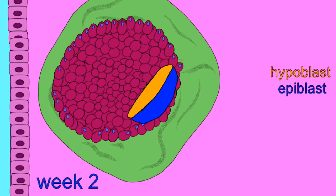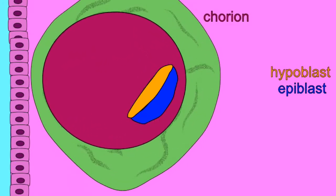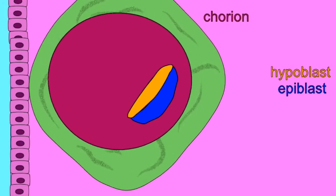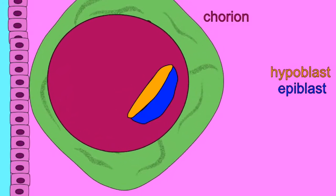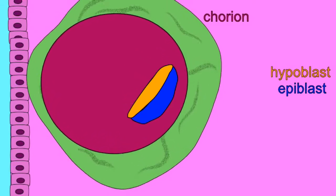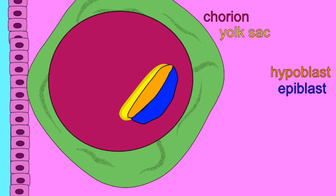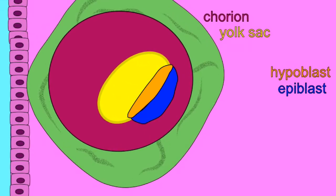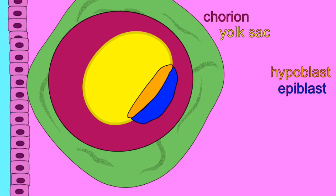Many cells which begin development in the second week of embryonic life form extra-embryonic membranes — membranes of embryo cells outside the body proper of the embryo. The chorion is very important, formed from the cytotrophoblast, and here represented in red.